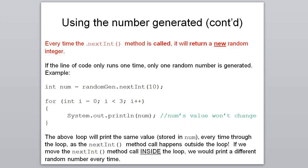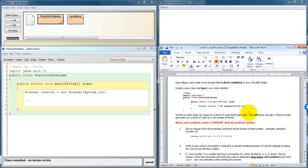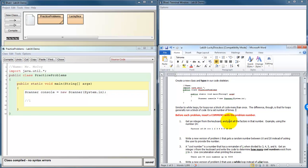Let's take a look at some of the practice problems for this lab set. Alright, here we are in BlueJ. Let's take a look. Get an integer from the keyboard and print all the factors of that number. What do you think? Let's go with of that number, factors of that number. Example, using the number 24, the factors of 24, so these are all the numbers that evenly go into 24. So first we need to prompt the user.